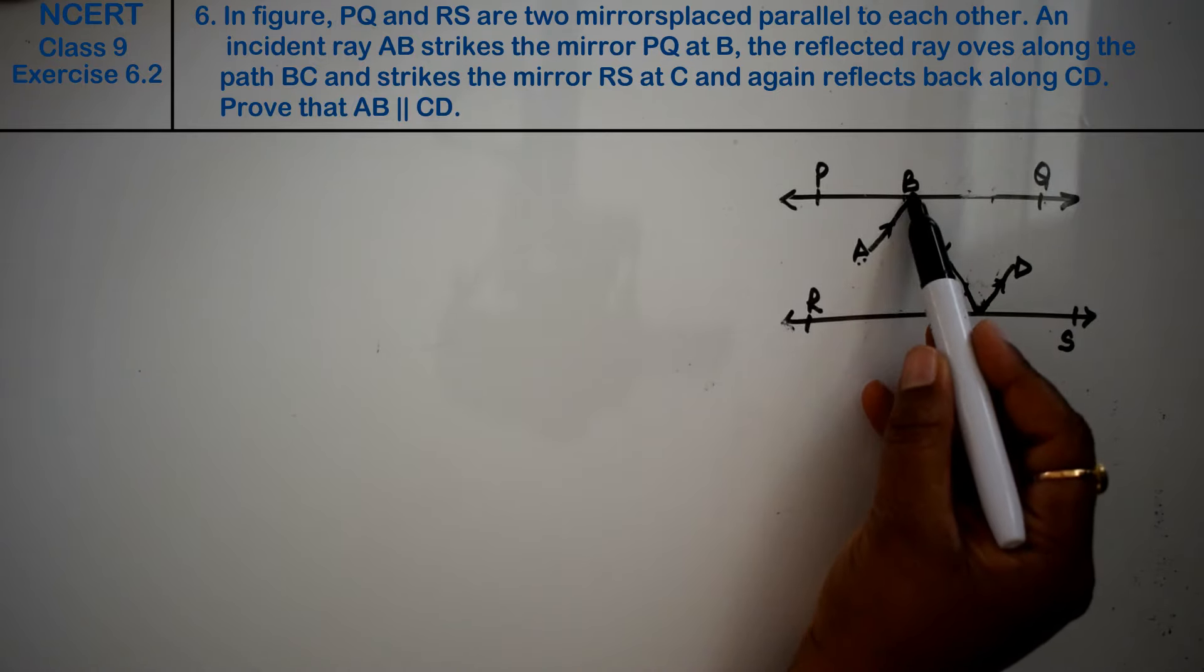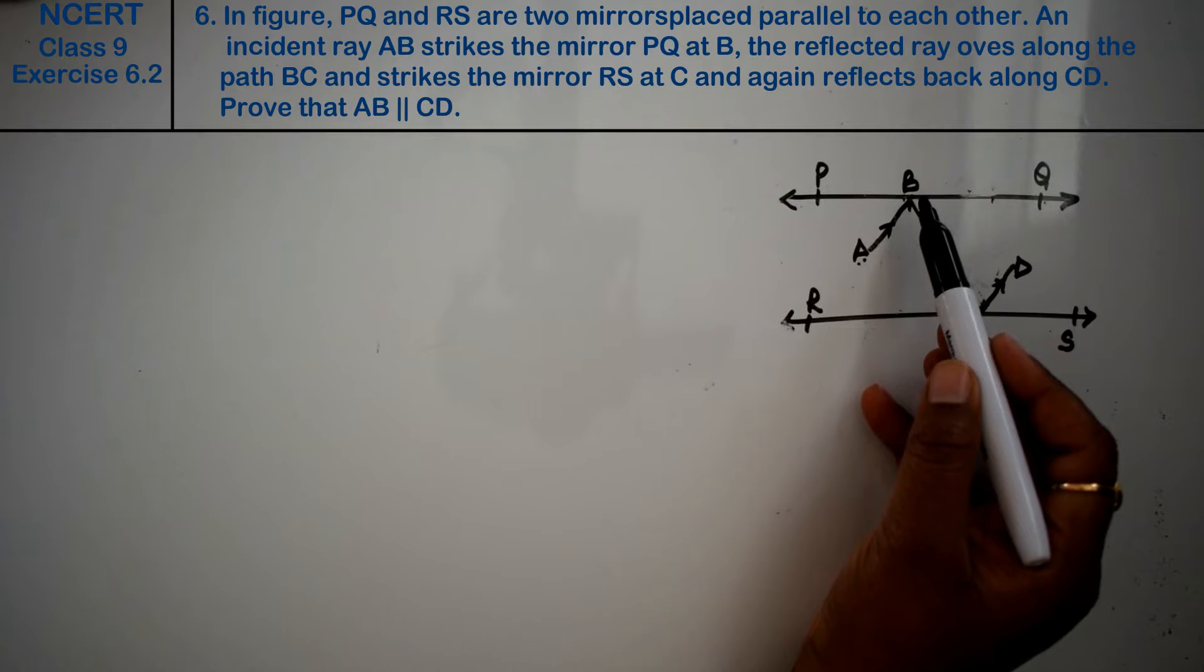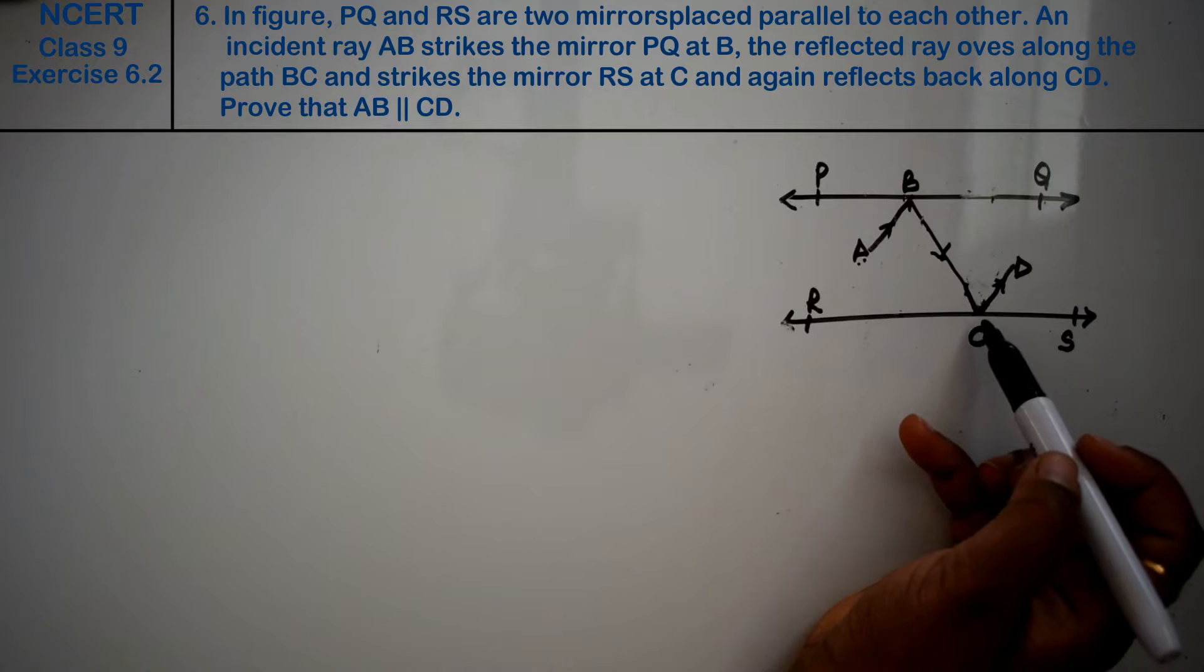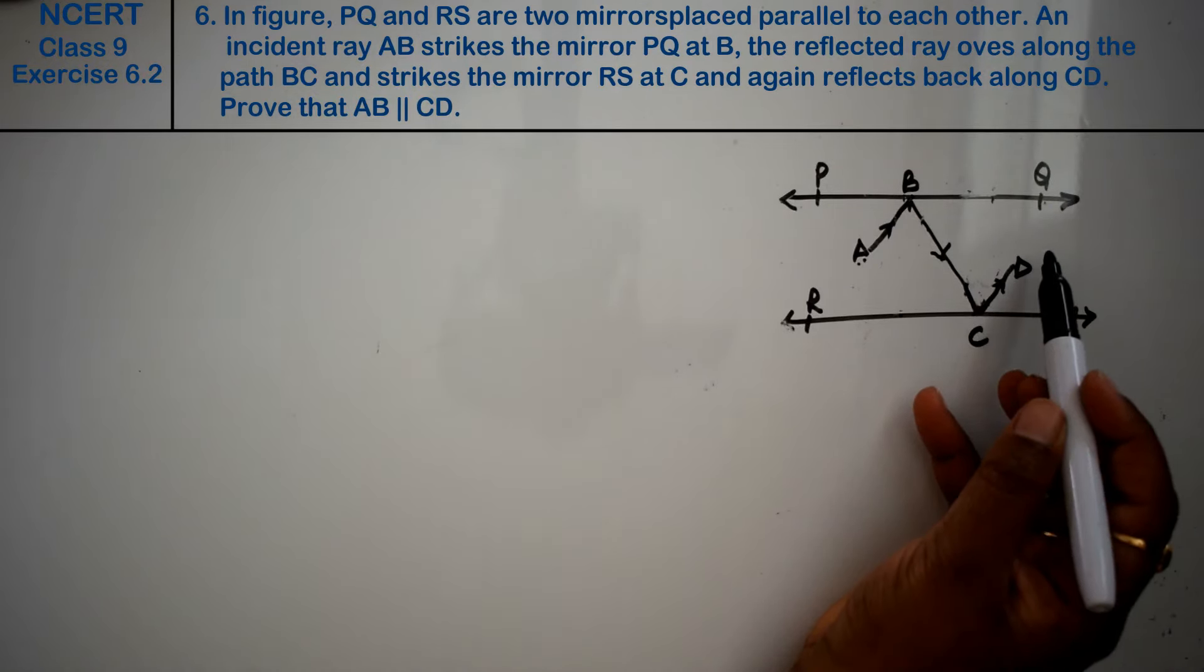The reflected ray moves along the path BC and strikes the mirror RS at C, and then reflects back along CD.